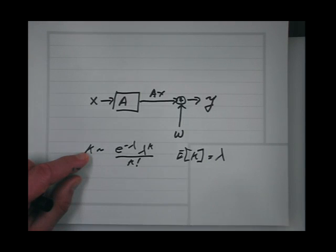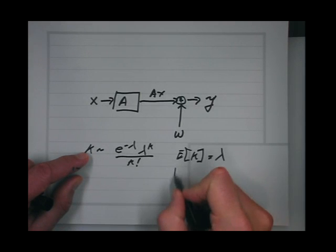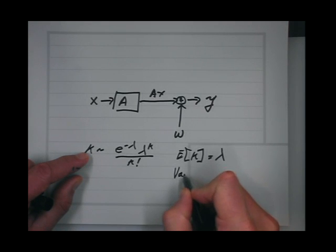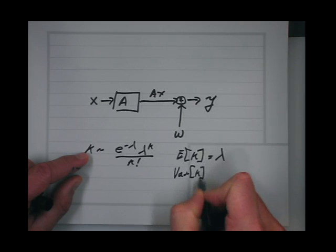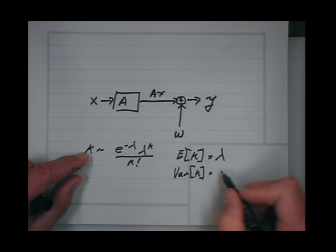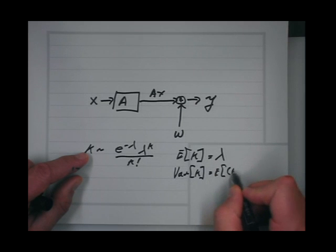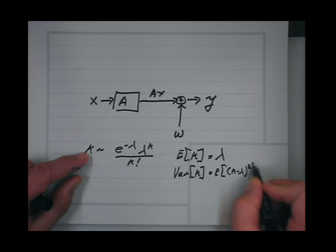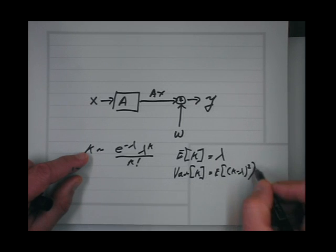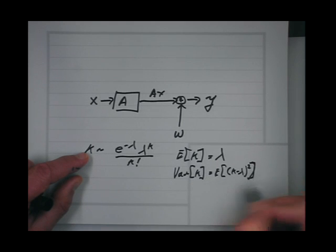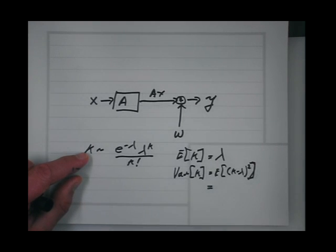The variance of k — I mean the expected value of (k minus lambda) squared — that's equal to lambda. So the mean and the variance are both lambda.